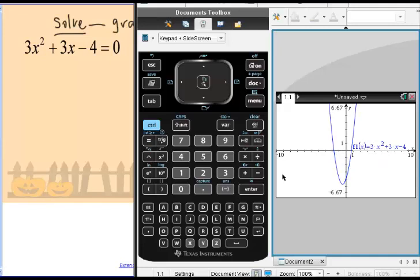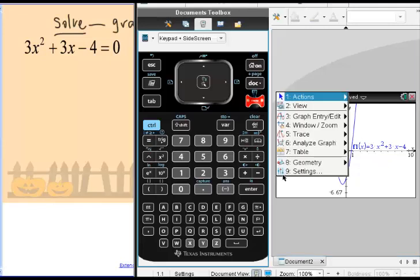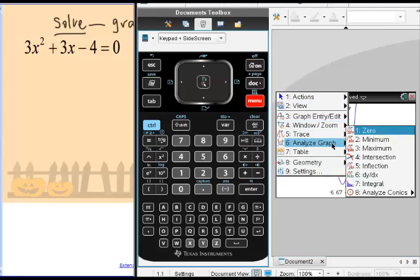To use your calculator to do this, we're just going to tap menu. We want to analyze this graph and find the zero. The zero is where the graph crosses the x-axis. So choose zero.